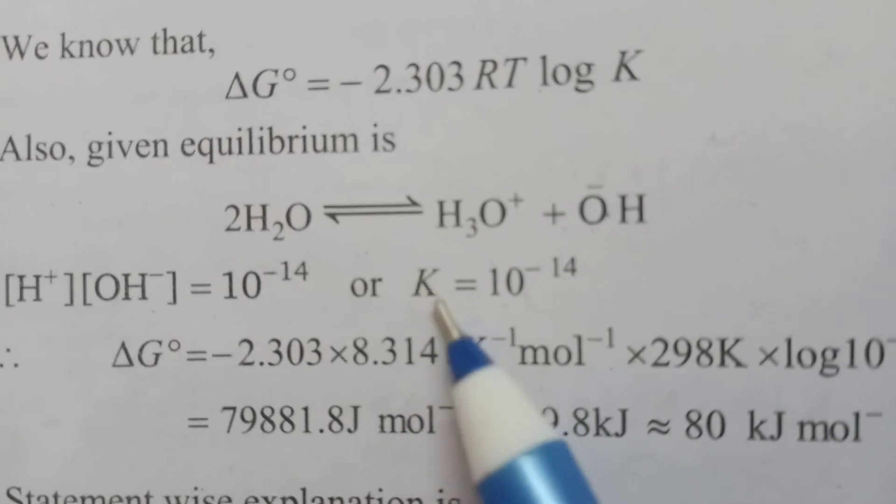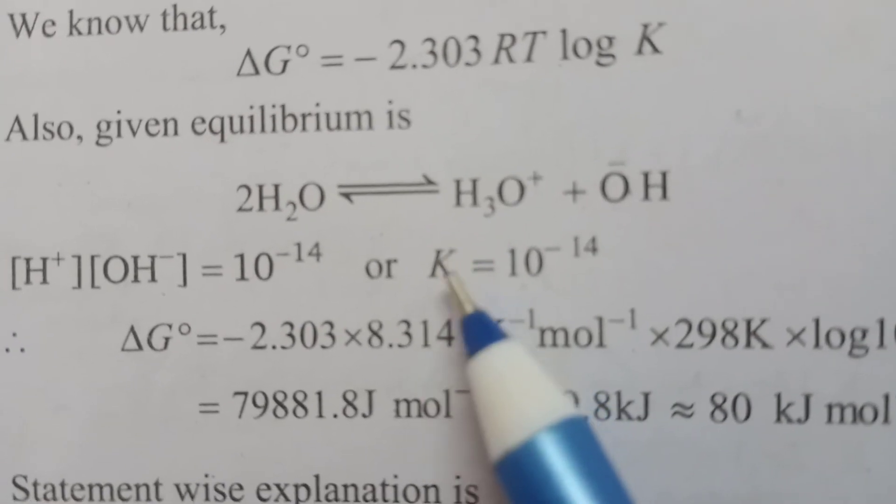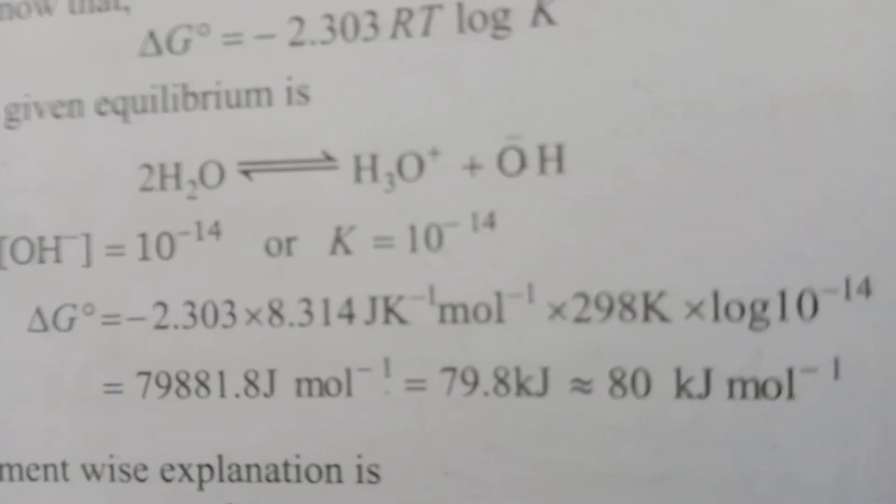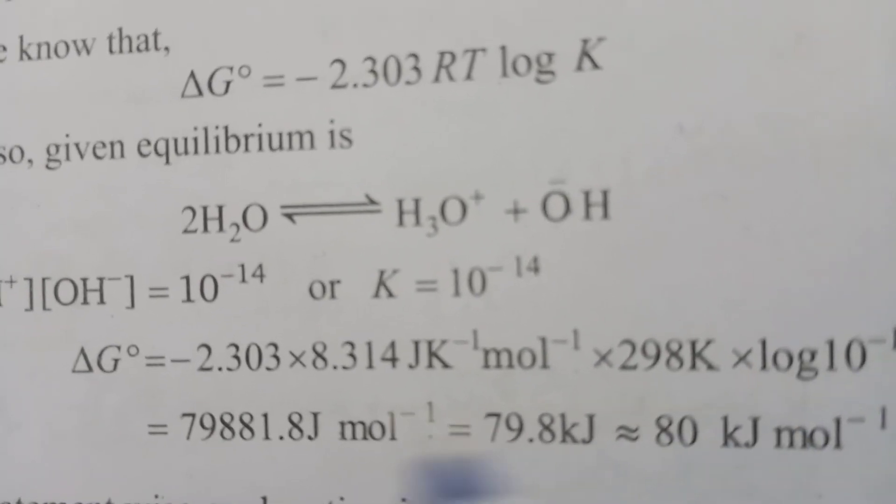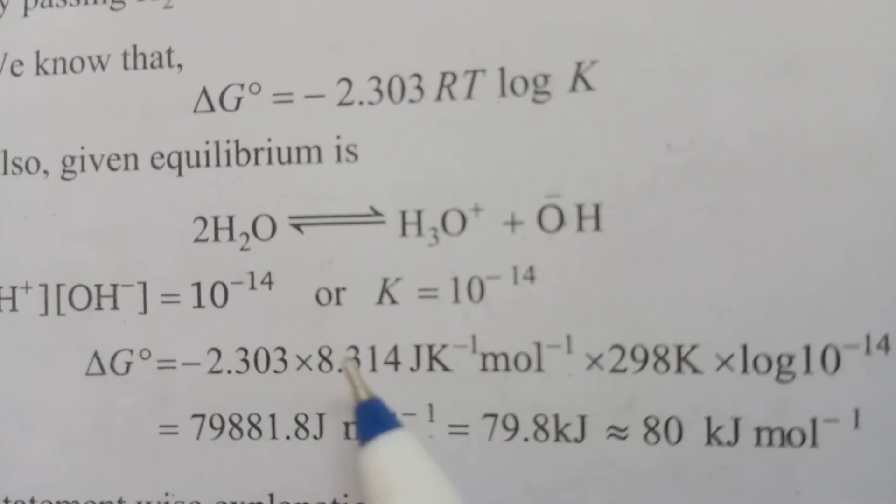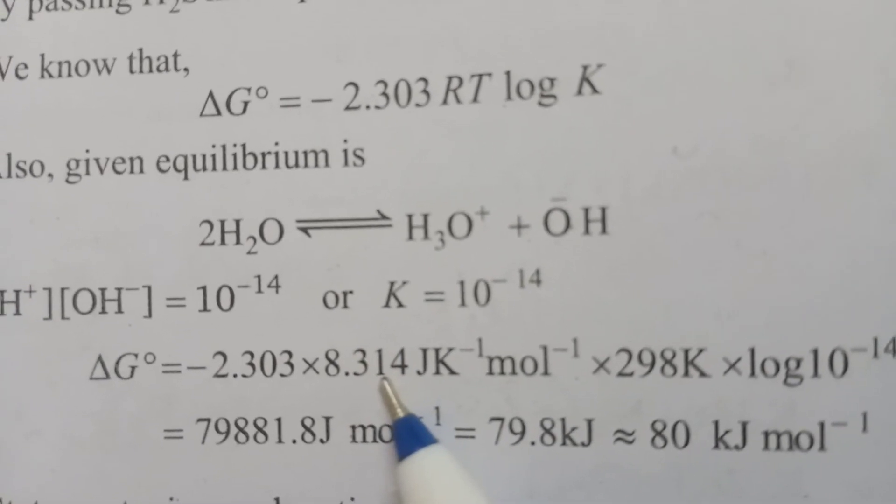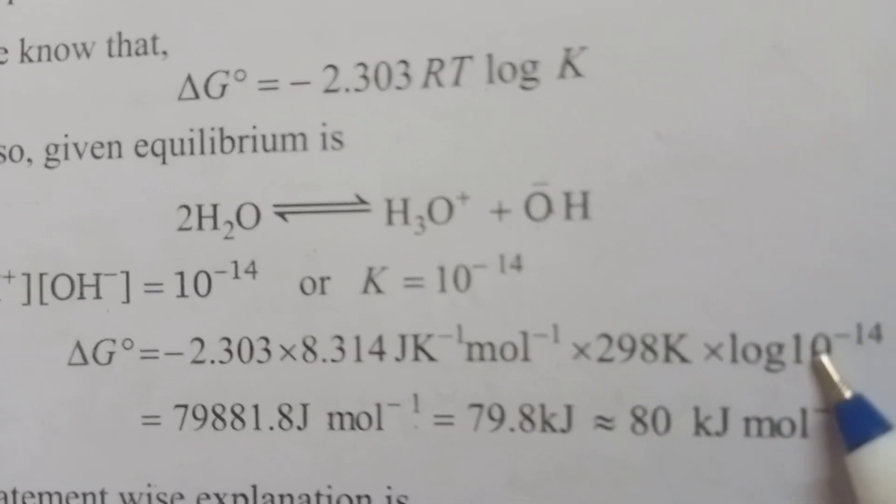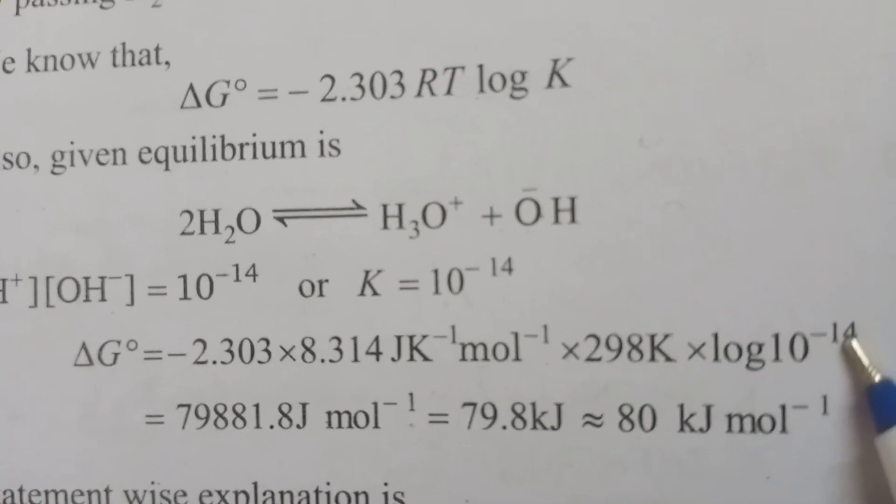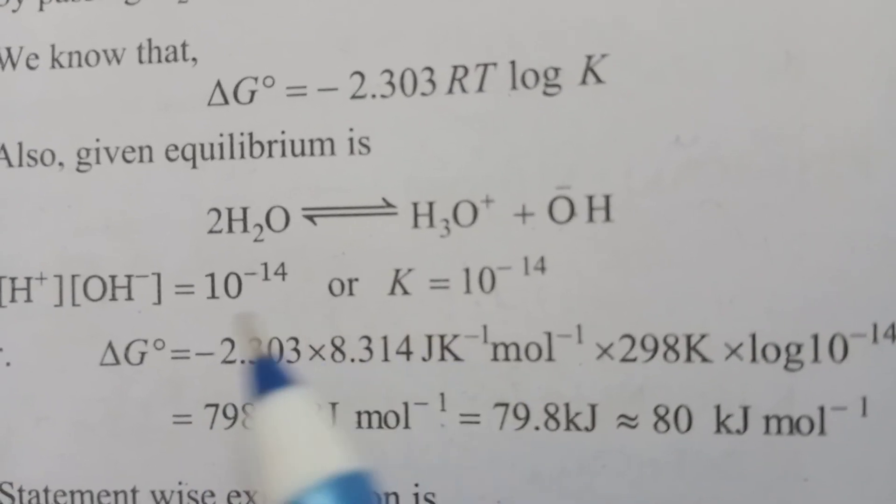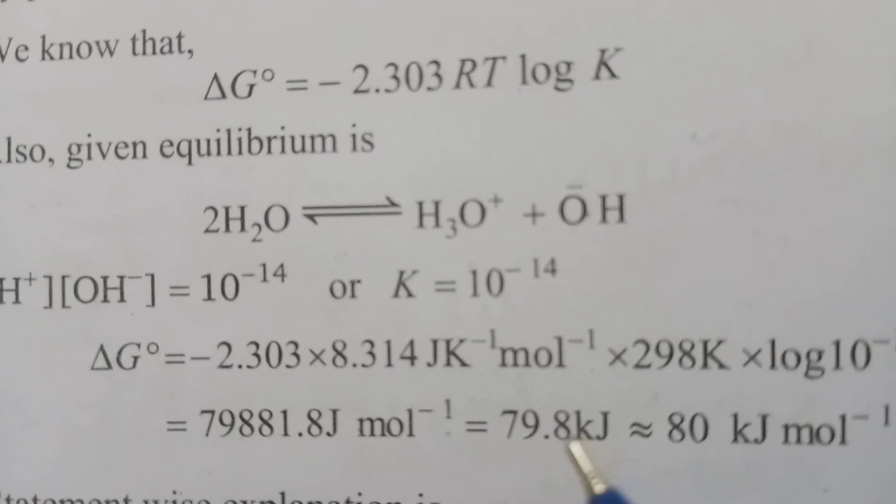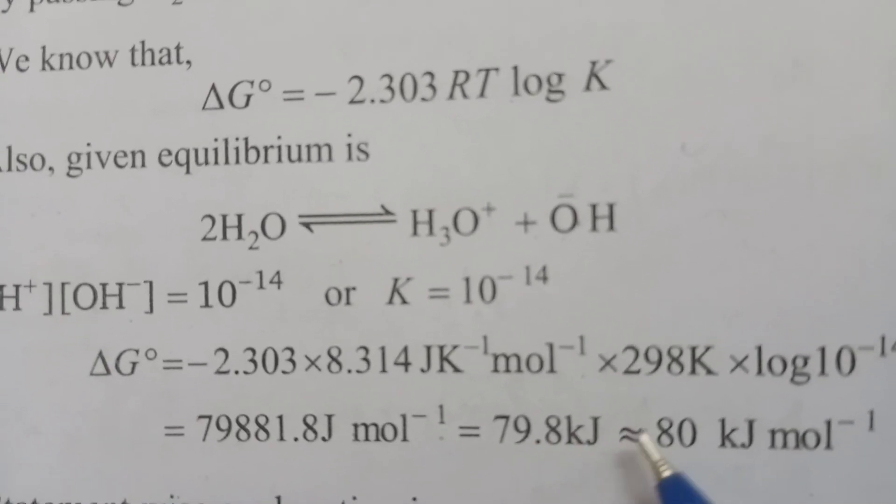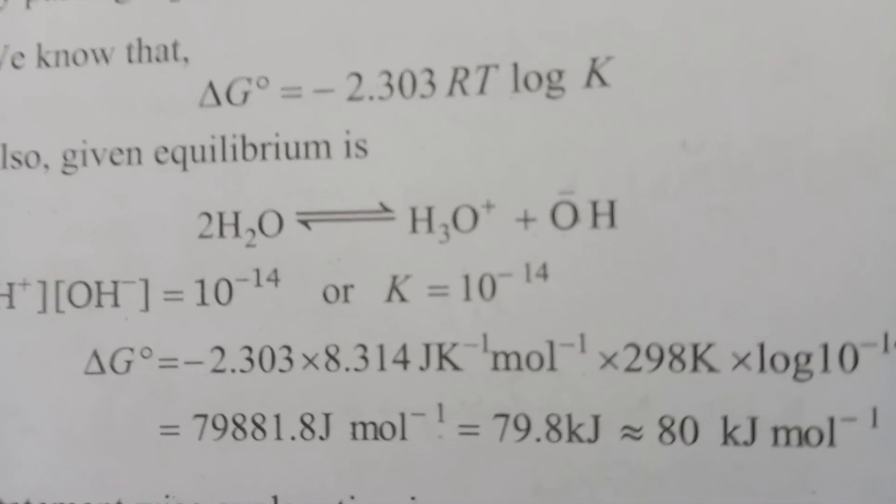Log K, where K is the ionic product of water, K = 10⁻¹⁴. Log 10⁻¹⁴. If you calculate all the things, we have 79.8 kJ/mol, approximately 80 kJ/mol.